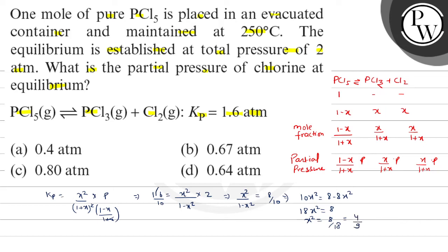So from here X will be 2 by 3. So you have partial pressure of chlorine, which is x upon one plus X, which is 2 by 3 upon 1 plus 2 by 3 into P which is 2. So 3 plus 2 is 5, 3 cancel, which is 4 by 5.